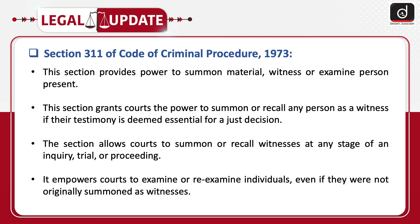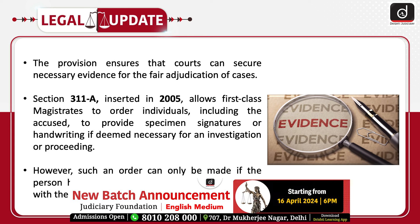Let's know more about Section 311 of the Code of Criminal Procedure 1973. This section provides the power to summon material witnesses or examine persons present. It grants courts the power to summon or recall any person as a witness if their testimony is deemed essential for a just decision. The section allows courts to summon or recall witnesses at any stage of an inquiry, trial, or proceeding. It empowers courts to examine or re-examine individuals even if they were not originally summoned as witnesses. The provision ensures that courts can secure necessary evidence for the fair adjudication of cases.